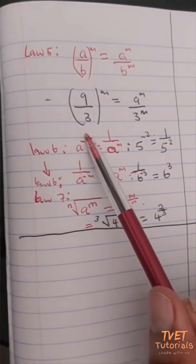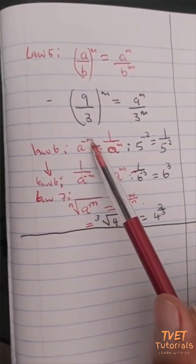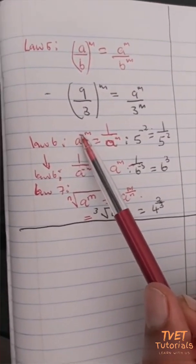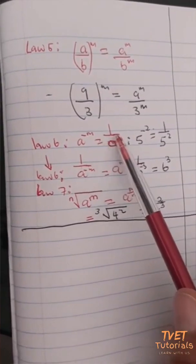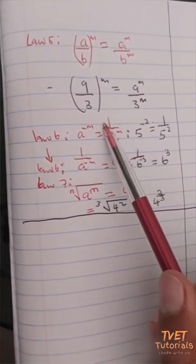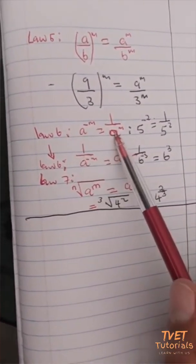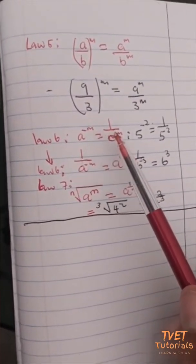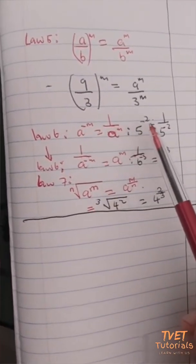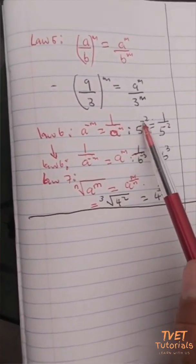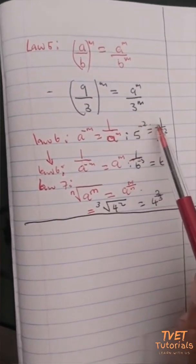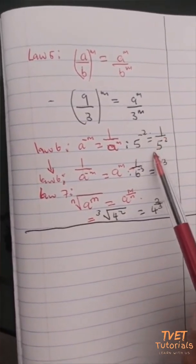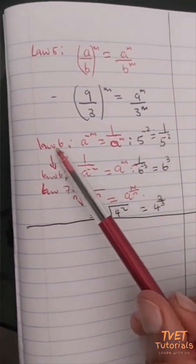Law six says that if I have the expression a raised to a negative exponent m, I can represent it as a positive number. If I don't want negatives in my answers, I can write it as 1 divided by a raised to the positive power m — that's just the inverse. For example, five raised to the power negative two can be represented as its inverse: one divided by five to the power two.